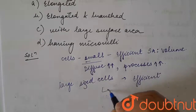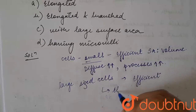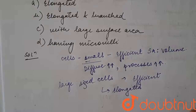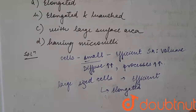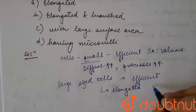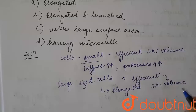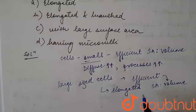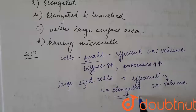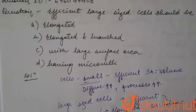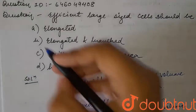the cell shape should be elongated. Their shape should be elongated in order to get an efficient surface area to volume ratio. Hence, efficient large size cells are elongated. So students, the answer to the question would be option A — elongated.